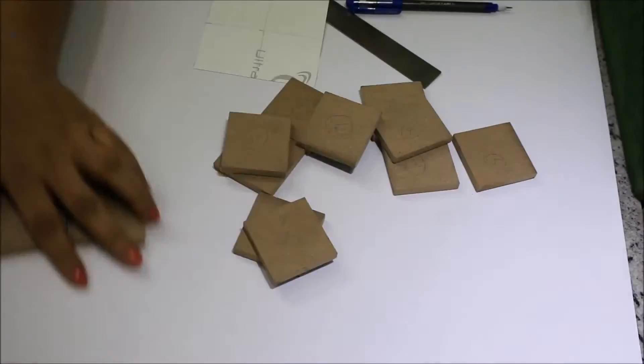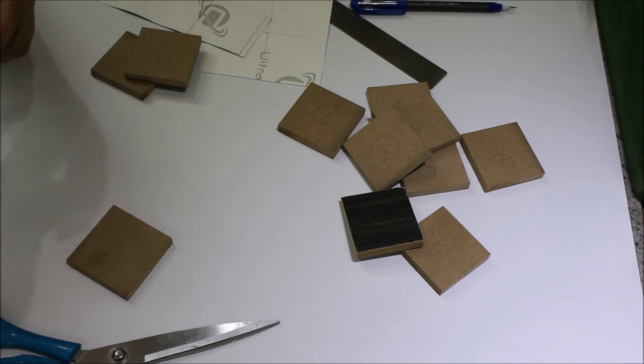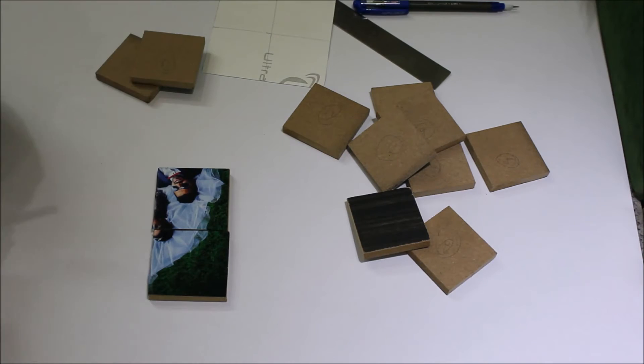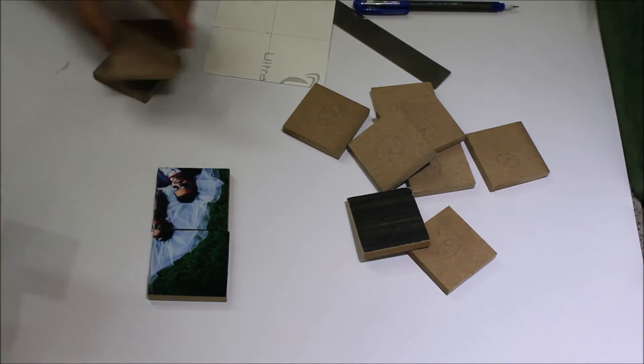Once I'm done marking, I'll take the photograph and start cutting it piece by piece and sticking it on each block. I've got the photo printed on a sticker sheet so that it's easy for me.